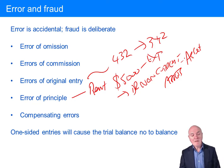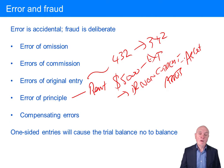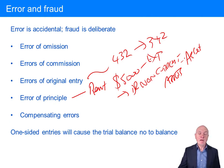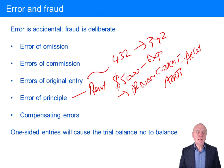Then you have compensating errors, where by good fortune one error simply cancels out an earlier error. There's no particular evidence of this — it can be really quite well hidden.